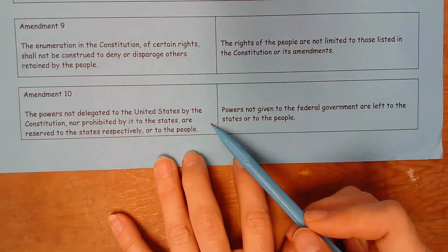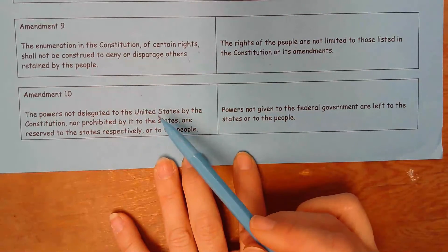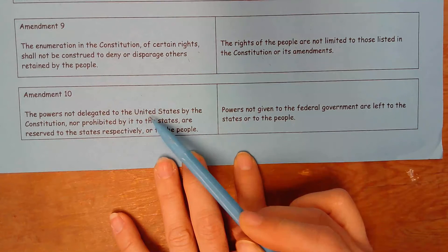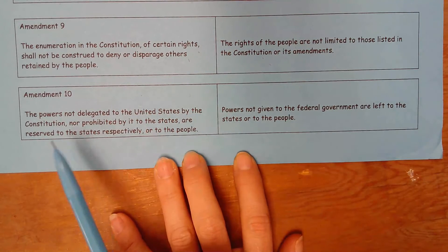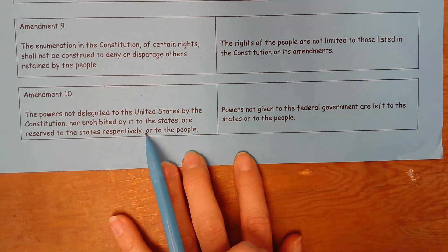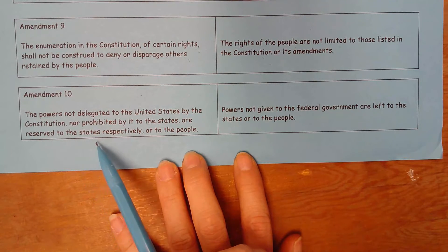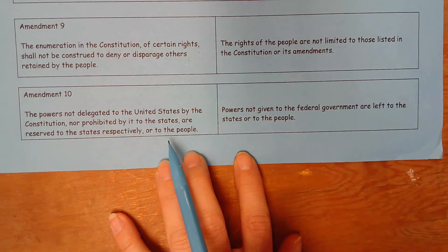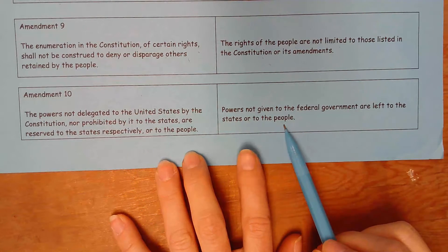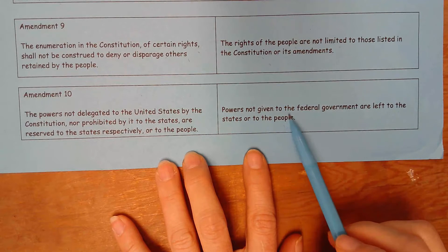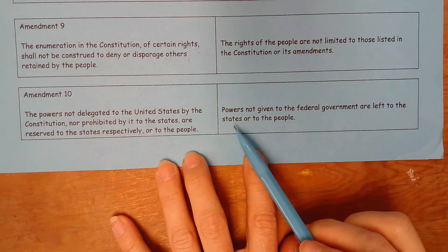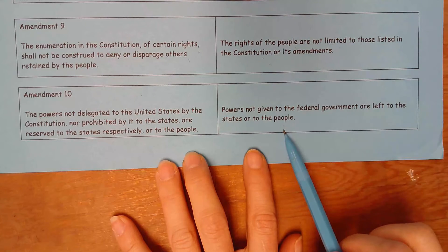Amendment 10 then says: the powers not delegated to the United States — in other words, to the federal government — by the Constitution, nor prohibited by it to the states, are reserved to the states respectively or to the people. In other words, the powers that are not given to the federal government are left to the states or to the people.